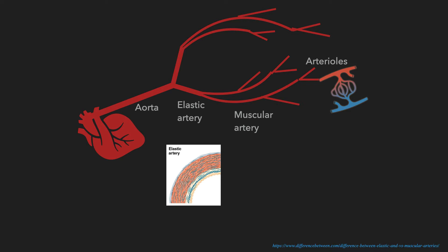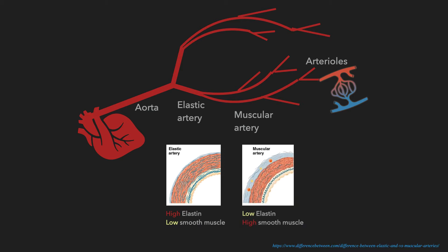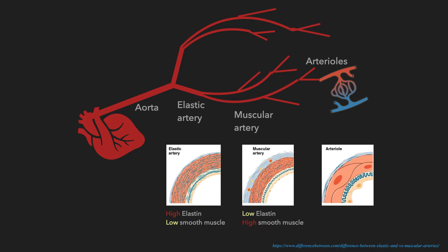As you can see here, elastic arteries have a high content of elastin but relatively low content of smooth muscle. In the muscular artery, you have relatively low elastin and a high content of smooth muscle. When blood reaches the arterioles, the arterioles only have smooth muscle without any elastin. Just because of the differences in histology, you have different compliance and resistance of arteries. In the elastic artery, you have higher capacitance and compliance — more flexible arteries. Compared to arterioles, which are high-resistance, stiff vessels.